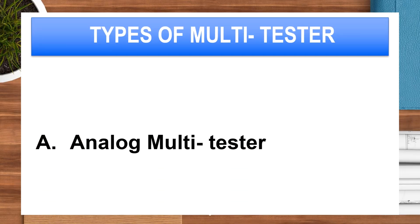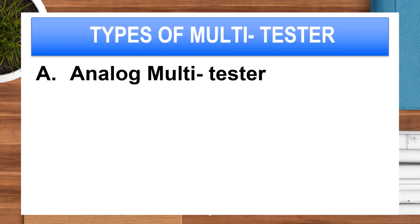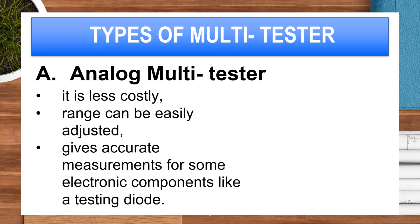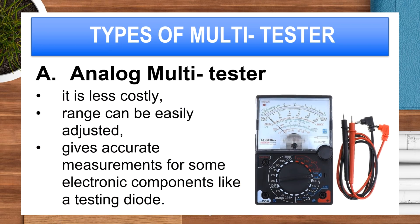The first type is the analog multitester. It is less costly, the range can be easily adjusted, and it gives accurate measurements for some electronic components, like testing a diode.